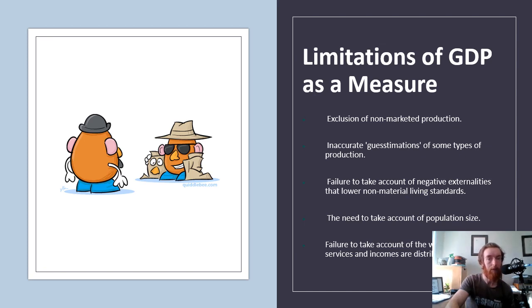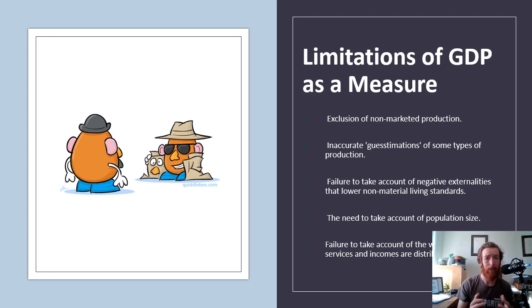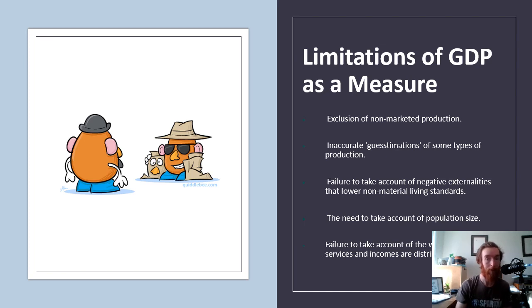The first limitation is that GDP excludes non-marketed production, sometimes referred to as black market production. This isn't just drugs and weapons — non-marketed production means anything where no tax is paid and the government doesn't get a slice of it. Things like DIY housework, cash-in-hand jobs, and black market transactions all contribute to the economy in some way, but their value isn't added to the GDP figure.